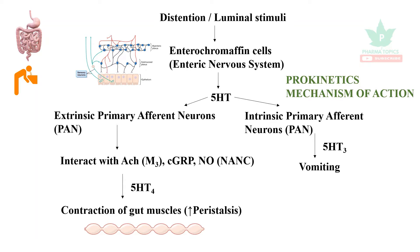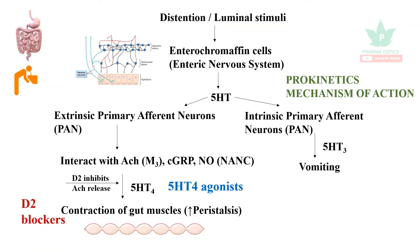Dopamine inhibitors reduce acetylcholine release, thereby increasing peristalsis. 5-HT4 agonists increase peristalsis, and D2 blockers increase acetylcholine release, which also increases peristalsis.